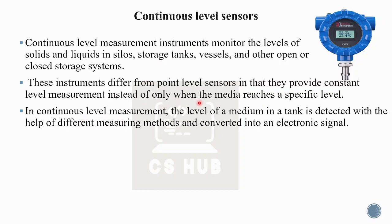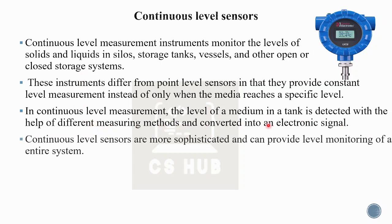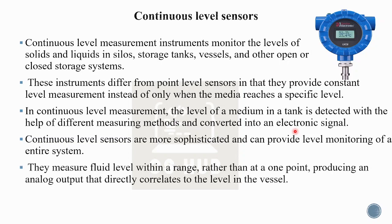In continuous level measurement, the level of medium in a tank is detected using different measuring methods and converted into an electrical signal. These sensors are more sophisticated and can provide level monitoring of an entire system. They measure fluid levels within a range and produce an analog output that directly correlates to the level in the vessel.